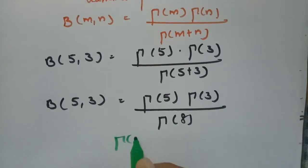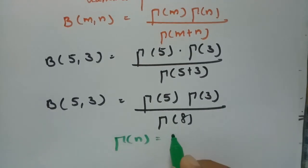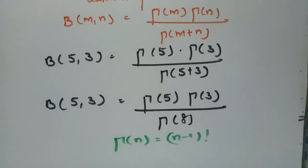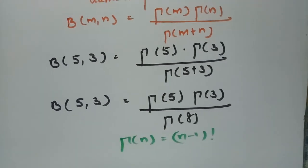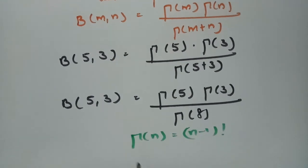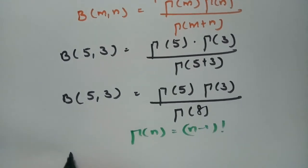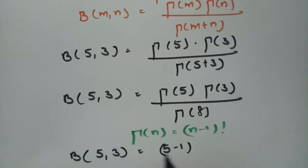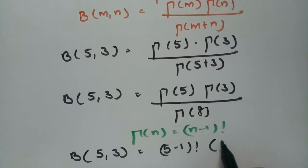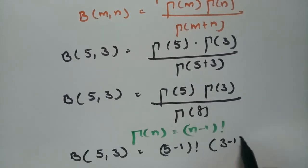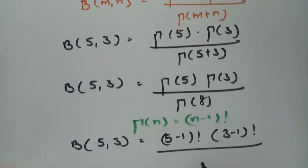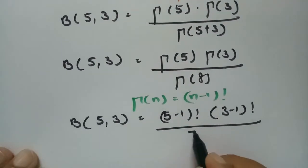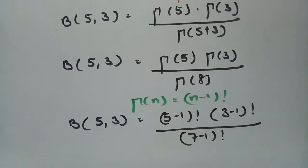Using the property gamma(n) = (n-1)!, if we substitute here, beta of 5 comma 3 equals (5 minus 1) factorial into (3 minus 1) factorial divided by (8 minus 1) factorial.